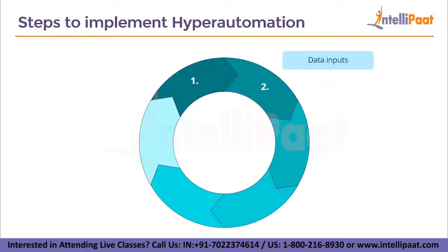The second step is data inputs. All subtasks within a process will generate data of some kind. To run the digital twin, we need to collect all input data from the various subtasks and feed it into the digital twin. Collecting all data from these sources is our second step.